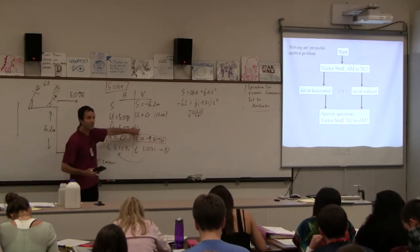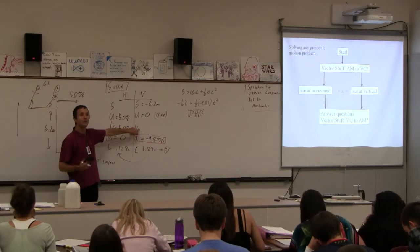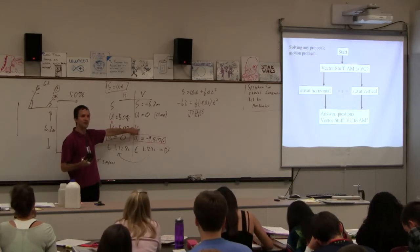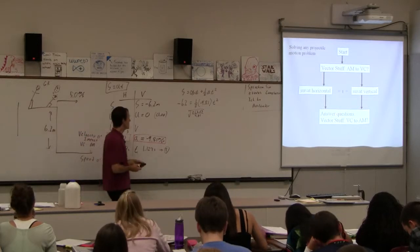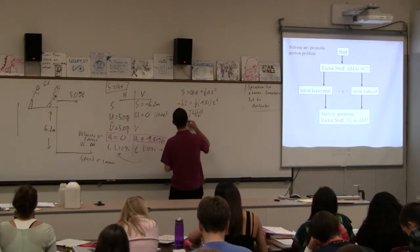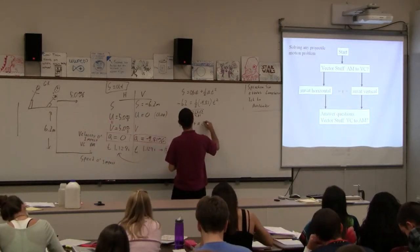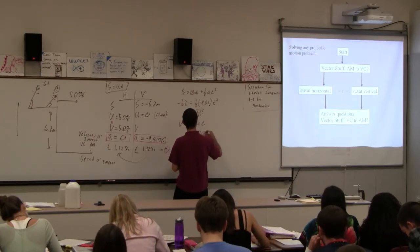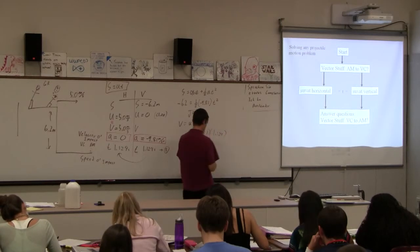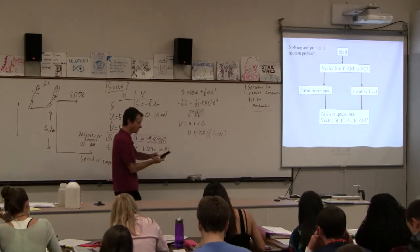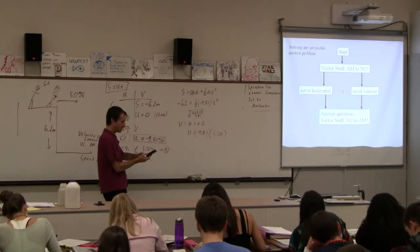And then let's find the final vertical velocity. If you're morally pure, you'll use v squared as u squared plus 2as. I'm lazy, so I'm going to use the time that I've got. I'm going to use v equals u plus at, right? So 0 plus negative 9.81 times 1.124. So I'm just going to multiply what's on my calculator by negative 9.81.